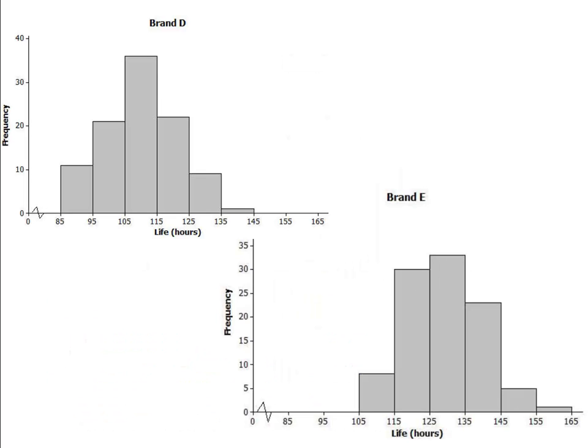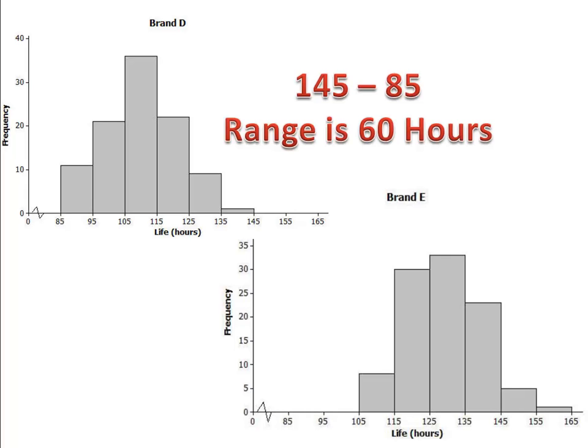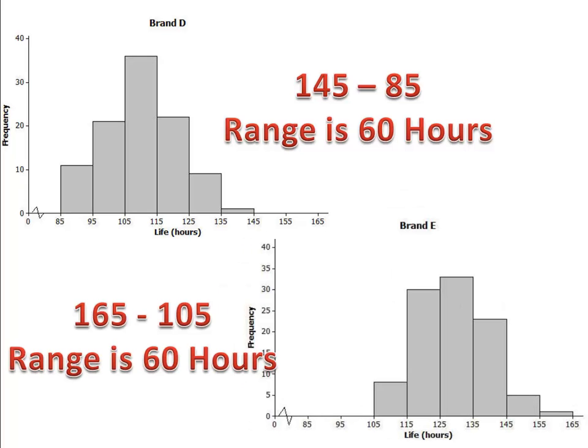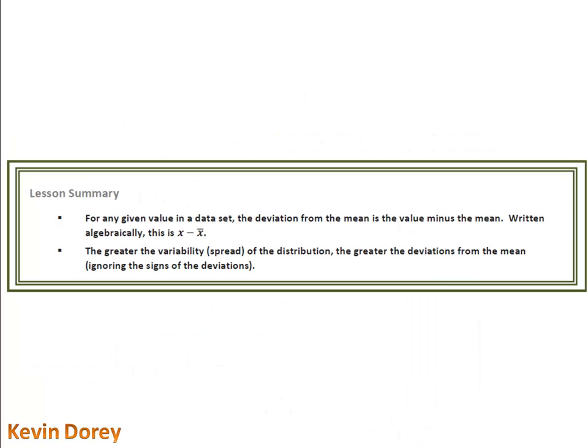Which brand has the greater variability in its life expectancy? We can look at the range. Brand D goes from 85 to 145, a range of 60 hours. Brand E goes from 105 to 165, also a range of 60 hours. Because the range is identical for both sets of data, they have the same variability. To summarize: calculate deviations from the mean by taking the data value minus the mean. Variability describes the spread of the data — the more spread out, the greater the variability.